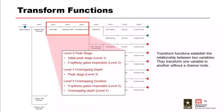Levels three through five contain transform functions. As their name implies, transform functions are used to transform values of one variable to another without a chance node—so transform function branches have a probability of one. We can use set relationships to transition from one variable to another, such as inflow to outflow, inflow to peak stage, or peak stage to overtopping depth. Performance and consequences can be functions of different loading variables than the initial hazard, and being able to use a transform function to move from one variable to the next is very useful.